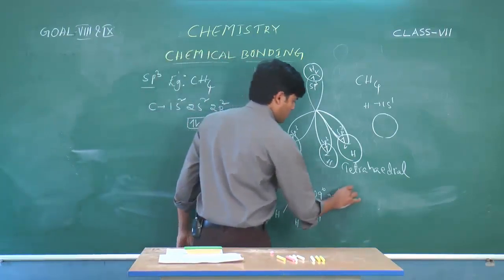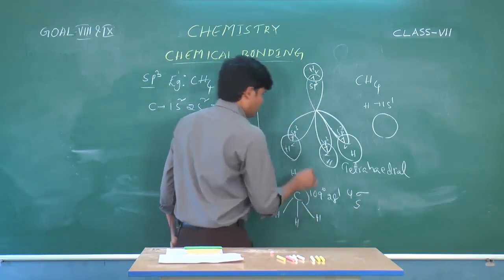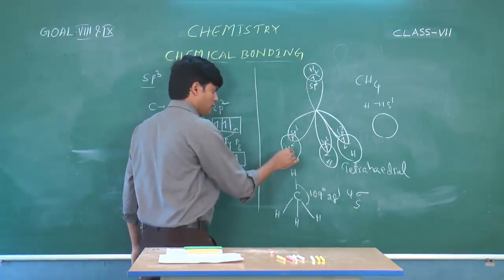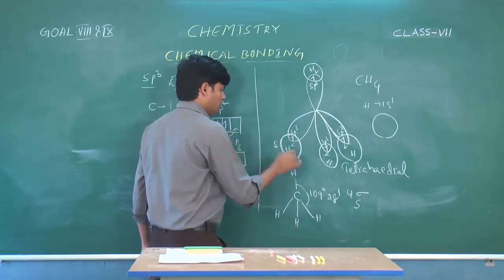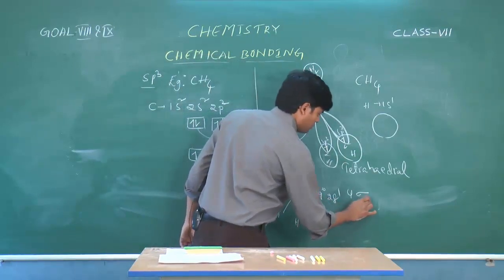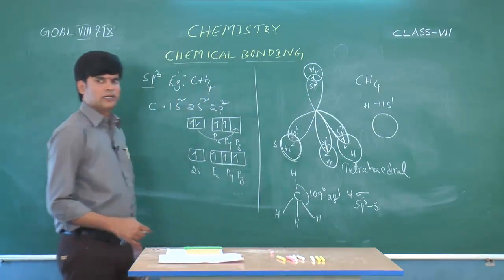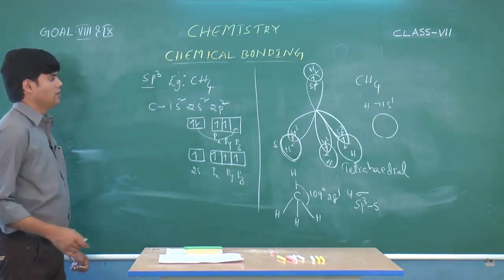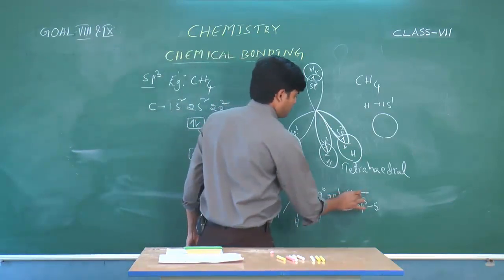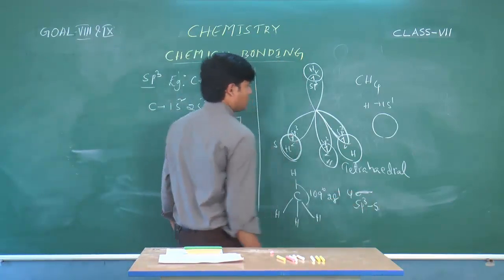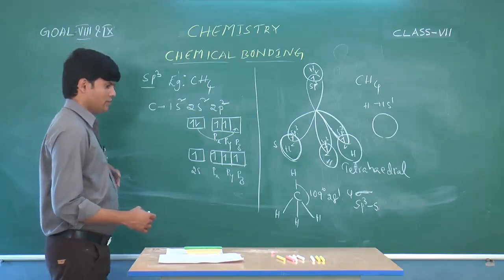There are 4 sigma bonds in total. Between the SP3 hybrid orbital of carbon and the s orbital of hydrogen, 4 sigma SP3-s bonds are formed in the methane molecule.